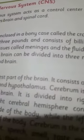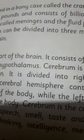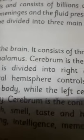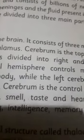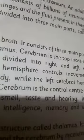The first part of the central nervous system is the brain. Our brain is enclosed in a bony case called the cranium. It weighs about three pounds and consists of billions of neurons.